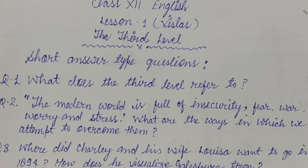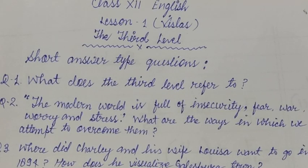The booking clerk, however, refused to accept the new dollar notes. He showed the author old-style notes, different looking. The author walks out of the station fast. Next day, he bought old-style currency at a premium. He went back to the station but could not find the third level.